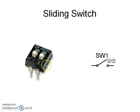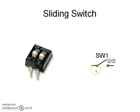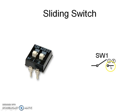A sliding switch has two positions: on and off. When the sliding switch is in the on position, it makes an electrical connection between its two terminals. When the sliding switch is in the off position, it breaks the electrical connection between its two terminals.